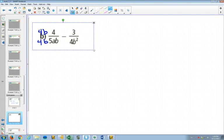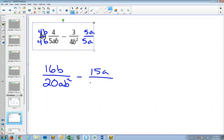In this one, I don't need to add any more b's because I've already got b squared, but I'm going to need to have a 5a and a 5a. So that's going to give me 16b over 20ab squared minus 15a over 20ab squared.